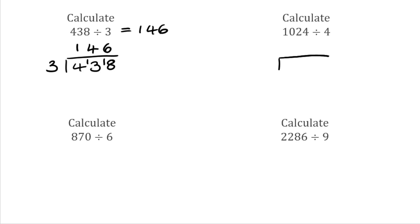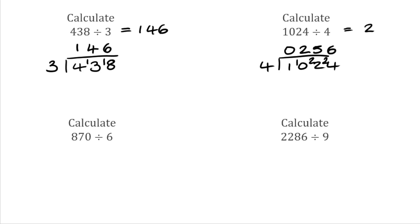Moving on, we have 1024 divided by 4. To begin with, we see how many 4s fit into 1 — that's 0, so we carry the 1 over. We then see how many 4s fit into 10 — that would be 2, because 4 times 2 is 8, leaving a remainder of 2. We then see how many 4s fit into 22 — that would be 5, because 4 times 5 is 20, with the remainder of 2. And finally, how many 4s fit into 24? That would be 6. So our final answer is 256.